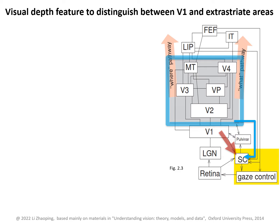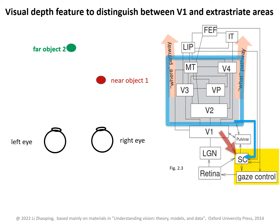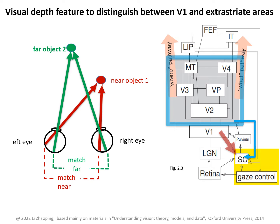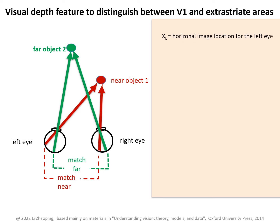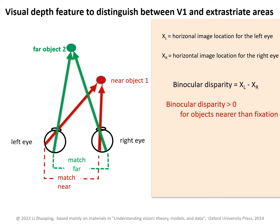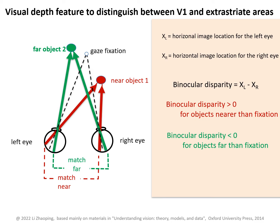To answer this question, let's use depth feature by stereo vision to distinguish between the role of V1 and the extrastriate areas. With two eyes, we can tell whether something is near or far by matching the two retinal positions of each object in our brain. Each match is between a location in the image for the left eye and a location in the image for the right eye, and the difference between these two image locations is the binocular disparity. When this disparity is positive, the object in 3D space is nearer than the 3D location where the gazes from the two eyes converge, and a negative disparity means the object is further than this binocular fixation point.